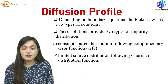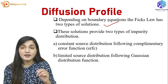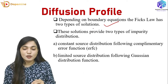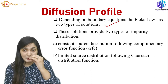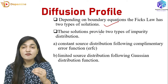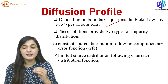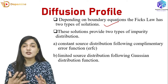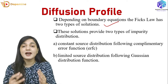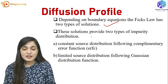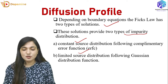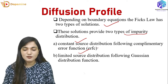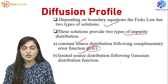What is a diffusion profile? It depends upon the boundary conditions. Fick's law has two types of solutions — the impurity atoms move into the substrate, and how much they move depends upon the boundary conditions. There are two types of impurity distributions: first is constant source distribution, which uses the complementary error function (ERFC); second is limited source distribution, which uses the Gaussian distribution function.